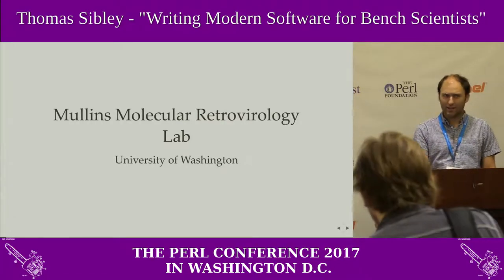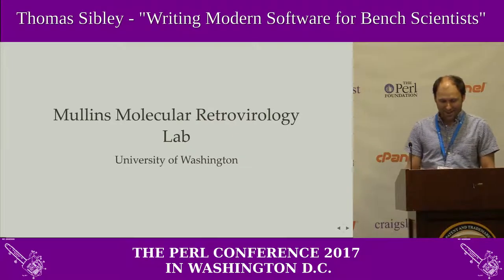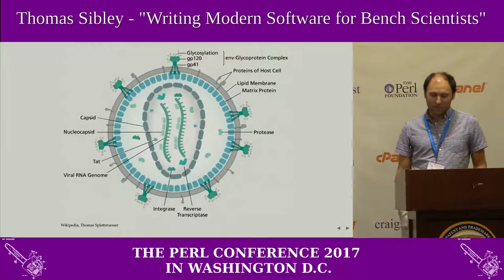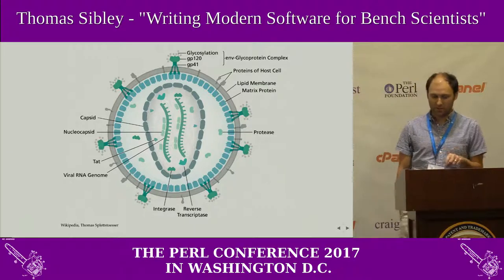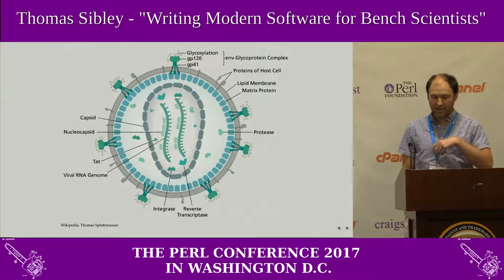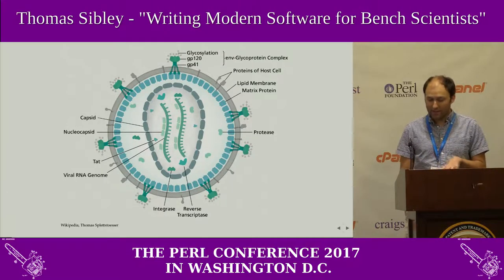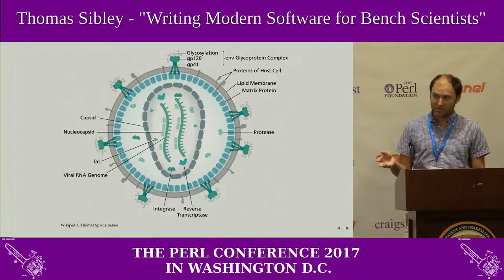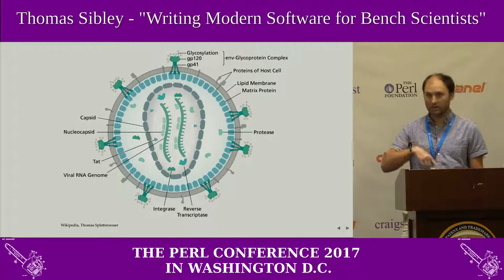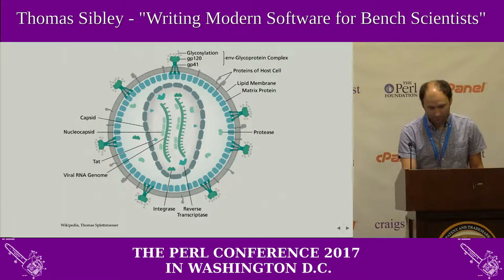I work in the Mullins Molecular Retrovirology Lab at the University of Washington in Seattle. Molecular retrovirology means we look at viruses with RNA genomes and the interaction of these viruses with the molecules in human cells. We approach questions about the evolution of these viruses using wet lab techniques at the bench and dry lab bioinformatics at the computer, each informing the other.